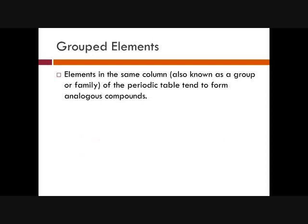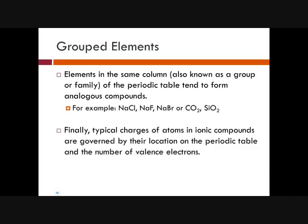Know that elements of the same column — also known as groups or families — of the periodic table tend to form analogous compounds. For example, when sodium bonds with different halogens, they always have a plus-one/minus-one charge and are always ionic. Similarly, carbon and silicon, when they form a covalent molecular compound with oxygen, both have double-bonded oxygens. So the shape of their molecule or ionic formation will typically be the same because they are in the same column — they are very similar.